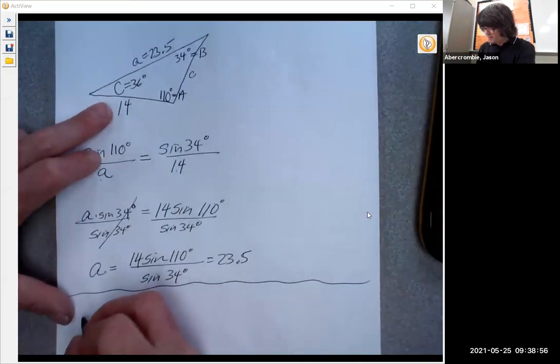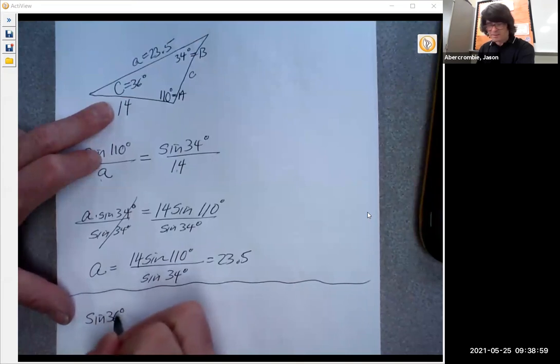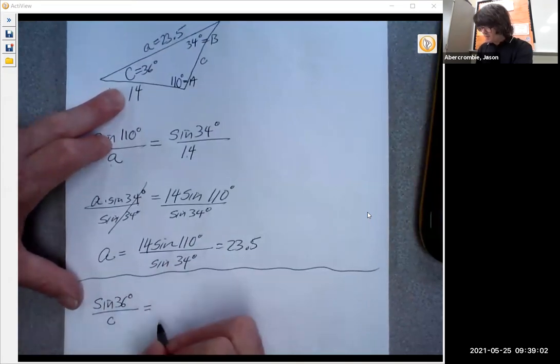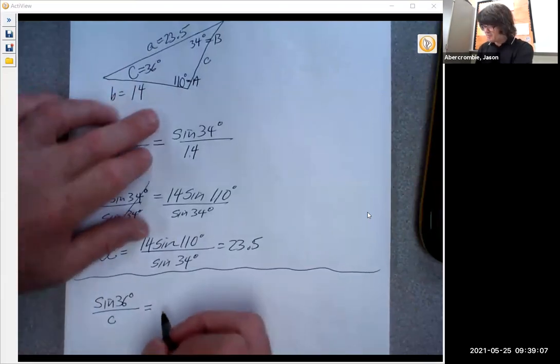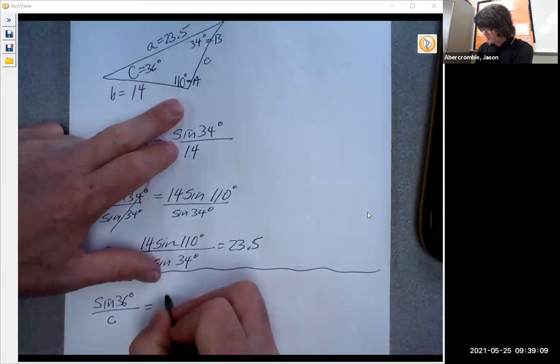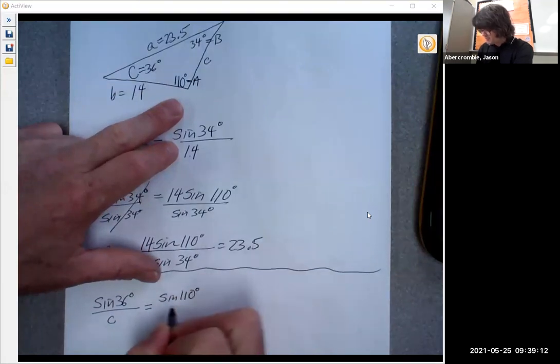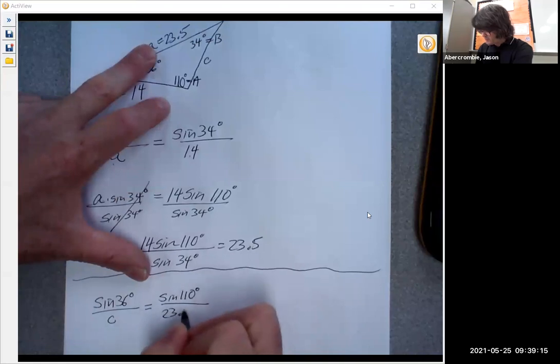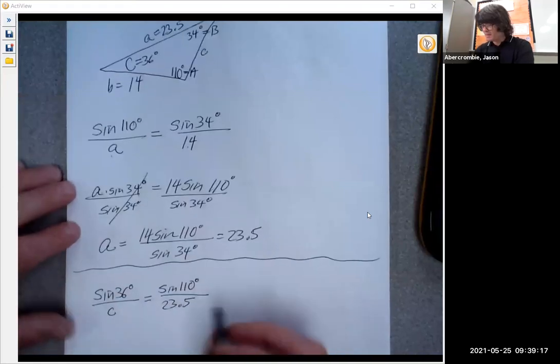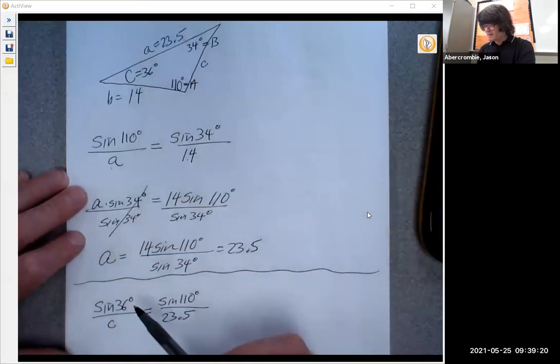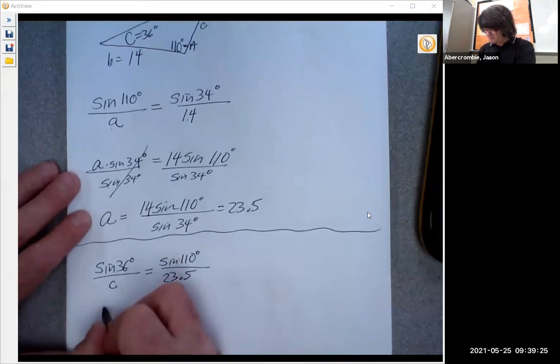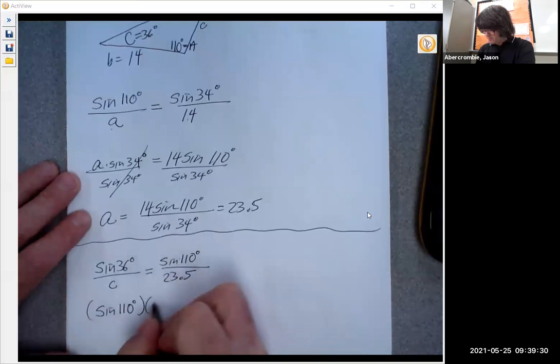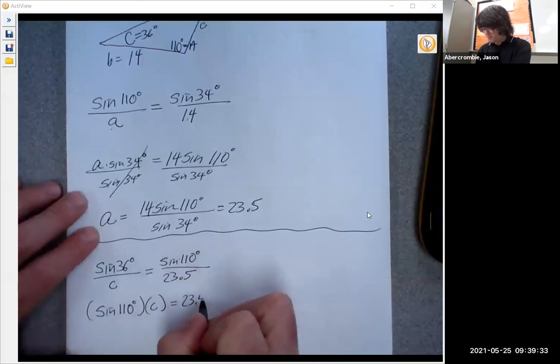So we will do now sine of angle C, sine 36 over c equals, you can choose A or B, it doesn't matter. I'll just choose A. How about sine of 110 degrees over 23.5. That's angle A and side a, and angle C and side c. So now we're going to cross multiply again. This times this is going to be sine of 110 times c equals 23.5 times sine 36.